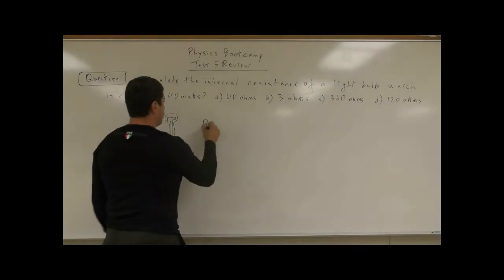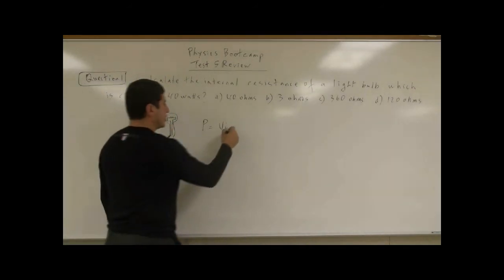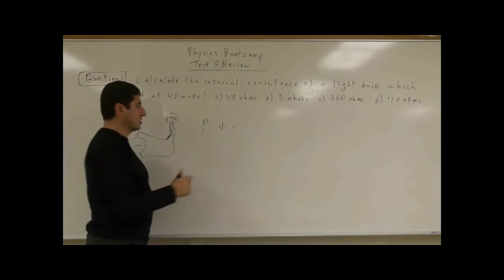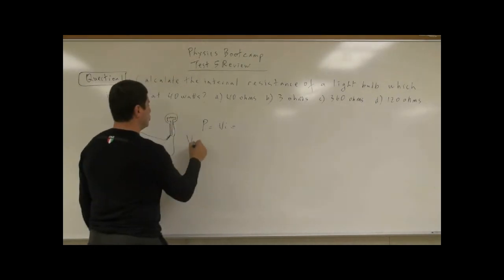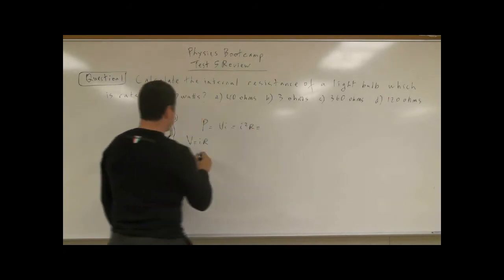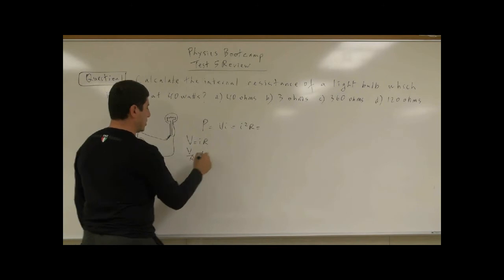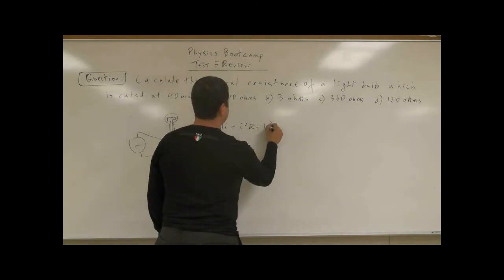the power output of the light bulb is voltage times the current in the circuit. Or we could use other forms of the equation. Voltage equals IR, so you have I²R. Or you could substitute I equals V over R.